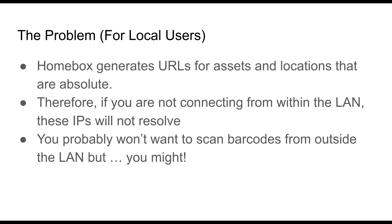When Homebox creates these automatic QR codes, which are kind of the basis for the system and are scannable — it does so for assets, locations, and labels — they're absolute path. So if you don't have your Homebox on the public-facing internet, which I think a lot of people are not comfortable with, your problem is solved if you do, because you can scan them from anywhere. But if you have it on the local environment and you brought a piece of inventory to a client site, but you're not on the local network anymore, then even if you have Tailscale set up — which works very nicely — Tailscale will give you a different public IP, so those barcodes won't scan.